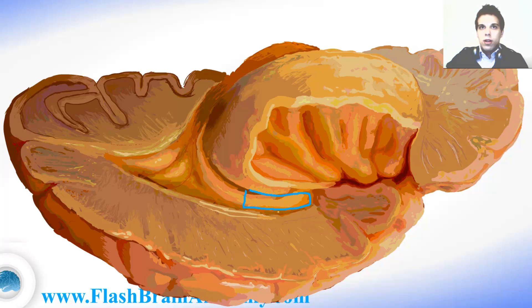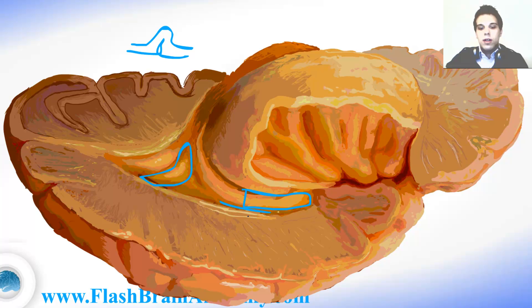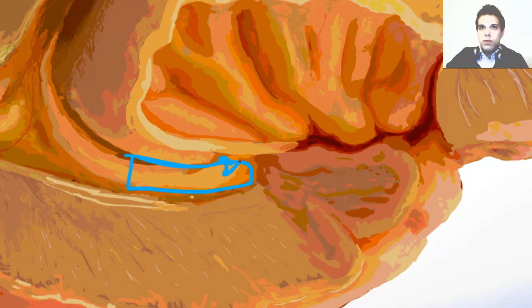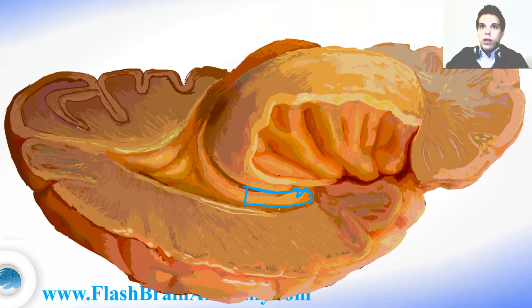Now I will talk about the inferior horn of the lateral ventricle. This over here is the hippocampus — the end portion of the hippocampus creates the medial wall of the inferior horn. The floor is created by the collateral eminence, which is simply the eminence created by the collateral fissure from the outside, in the same way the calcar avis is created. If we look up from inside, we see the medial part of the roof created by the stria terminalis and the lateral part of the roof created by the cauda of the caudate nucleus. The lateral wall is again created by the tapetum.